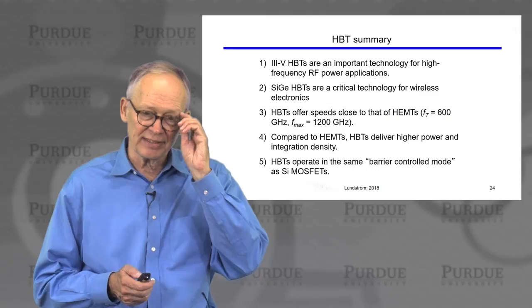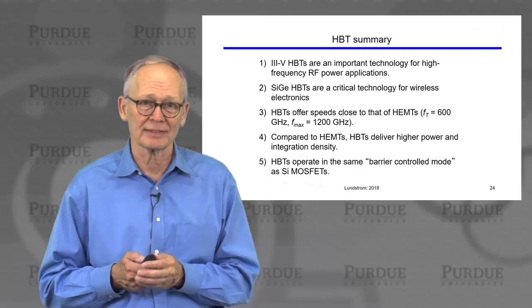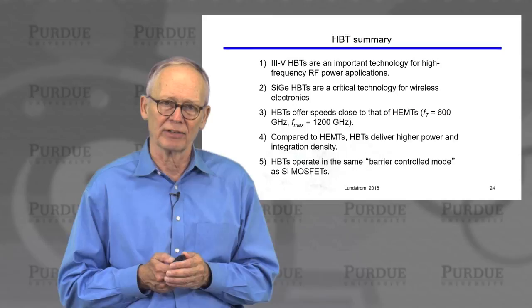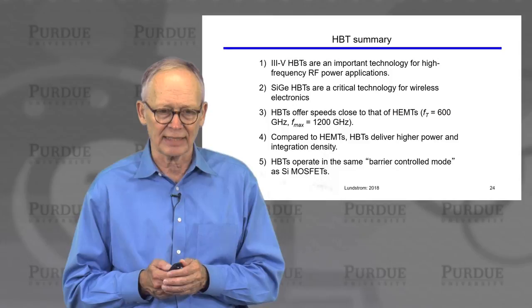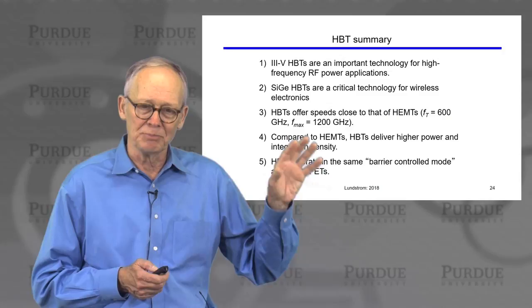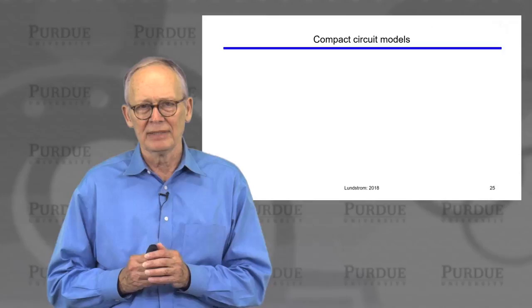A quick summary of what we learned about HBTs: they are important technologies, especially when we need RF power. Silicon germanium HBTs are especially important in wireless personal electronics. HBTs offer speeds close to HEMTs — both have achieved terahertz frequency operation. Compared to HEMTs, HBTs deliver higher power and more integration density. But HBTs, just like HEMTs and just like MOSFETs, are barrier-controlled transistors, operating in that same mode with the same kind of understanding we have for MOSFETs.